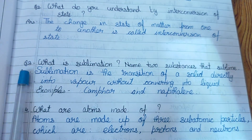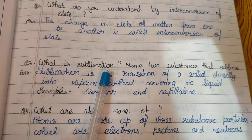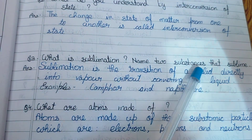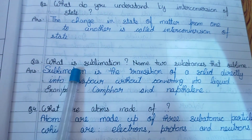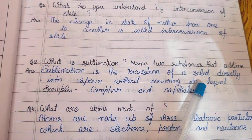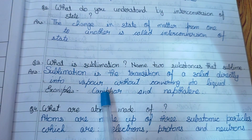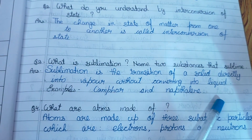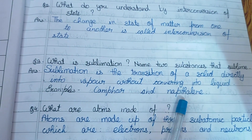Question number 3: What is sublimation? Name two substances that sublimize. Sublimation is the transition of a solid directly into vapor without converting into liquid. For example, camphor and naphthalene.